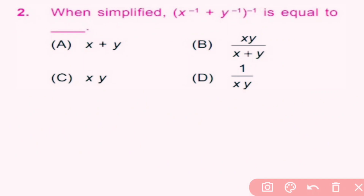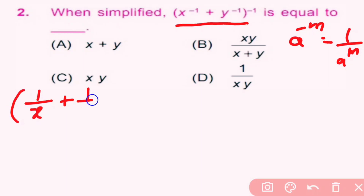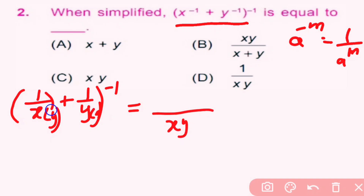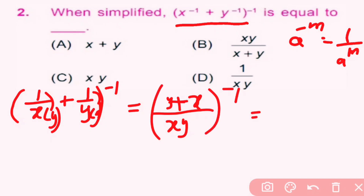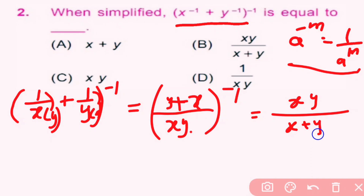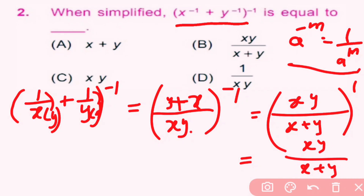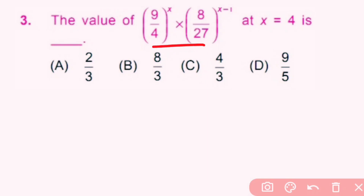Question number 2: when simplified, this is equal to dash. Using the equation, in bracket (1/x plus 1/y) raised to minus 1 — we make the denominator same by multiplying: denominator is xy, giving (y plus x) raised to minus 1. Using this equation, we take xy in the numerator and (x plus y) in the denominator, raised to power 1, which gives xy by (x plus y). Option B is the correct answer.